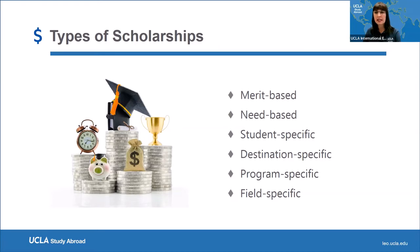Student-specific is focused on who you are. Underrepresented or minority scholarships are the most common awards in this category. It can be based on gender, race, religion, medical history, or other student-specific factors such as if you're a transfer student, a first-gen, a single mom, African-American, Asian, Latino, and so on.